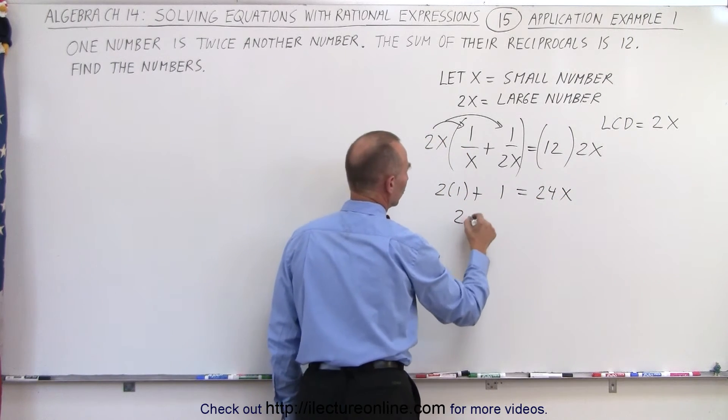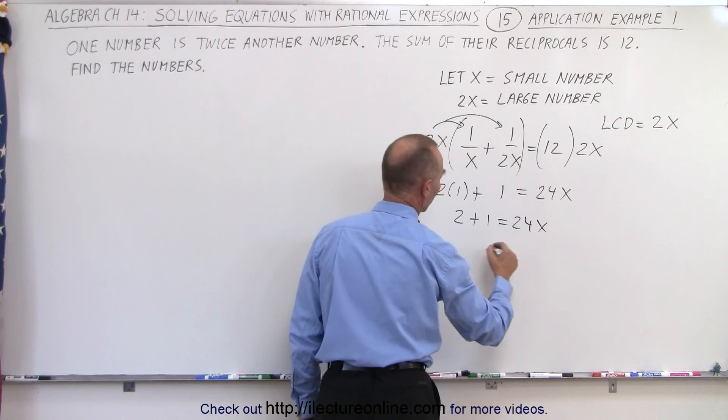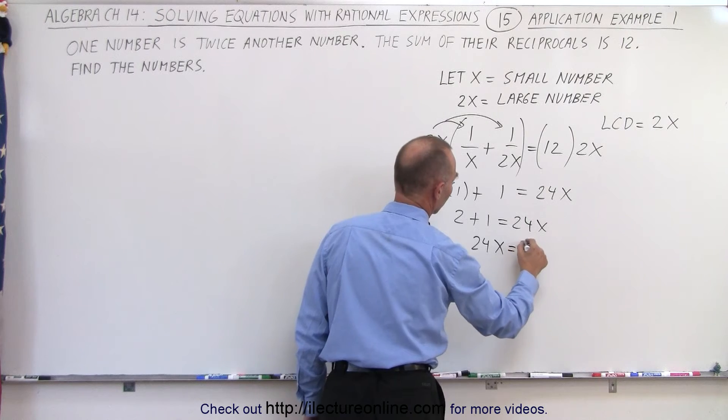Here we end up with 2 plus 1 equals 24x, or 24x is equal to 3.